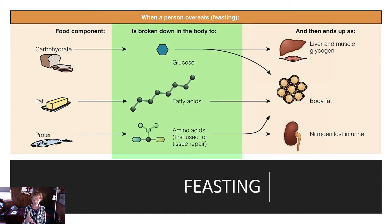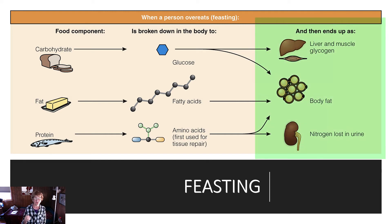Carbohydrates into glucose, fats into fatty acids, proteins into amino acids. The carbohydrates that aren't being used for energy are stored in the liver. But we have a limited capacity to store carbohydrate as glycogen in the liver and the muscle. Once those stores are full, those excess carbons form fat.